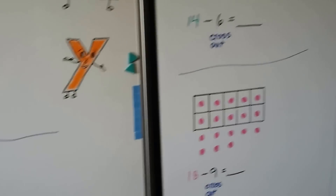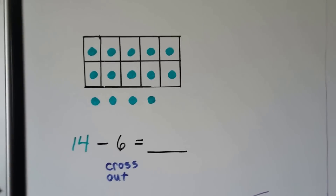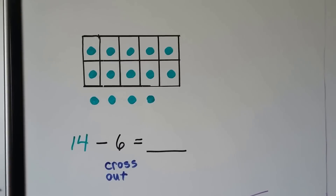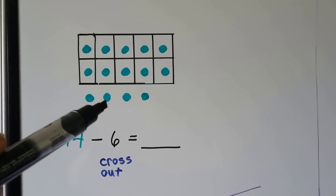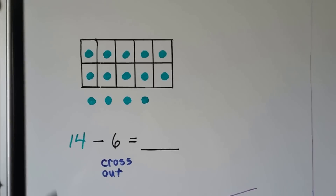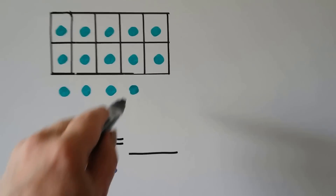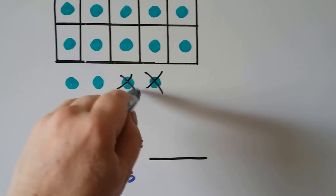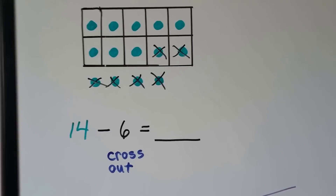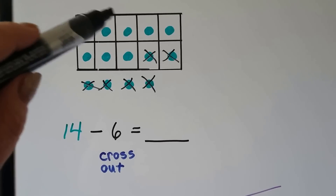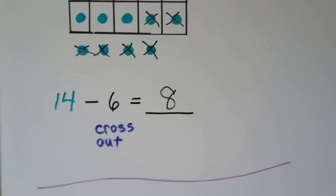So we can cross out to subtract. We have a 10 frame with some extra counters — 10, eleven, twelve, thirteen, fourteen counters. We're going to cross out to subtract 6: cross out one, two, three, four, five, six. How many counters are left? One through eight — 14 minus 6 is equal to 8.